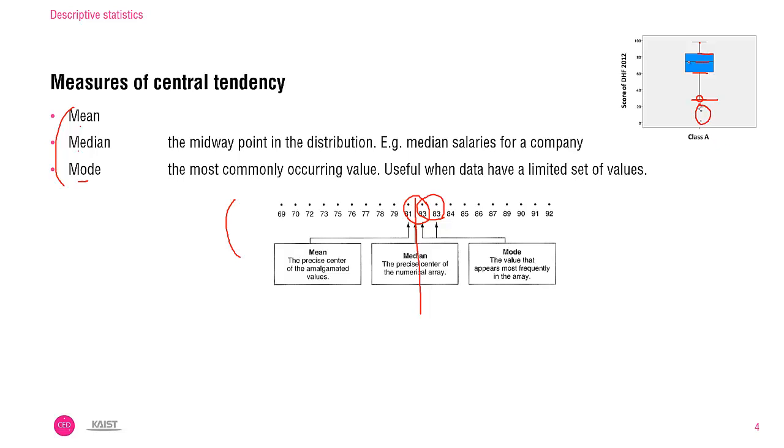So the line which crosses almost the central part of the box indicates, in box plot, the median.